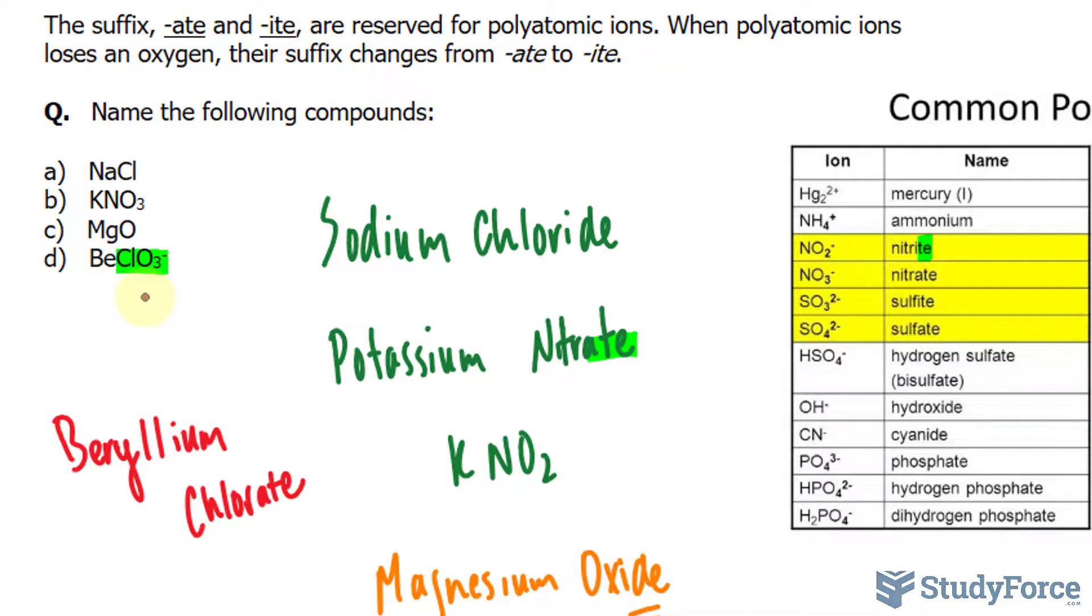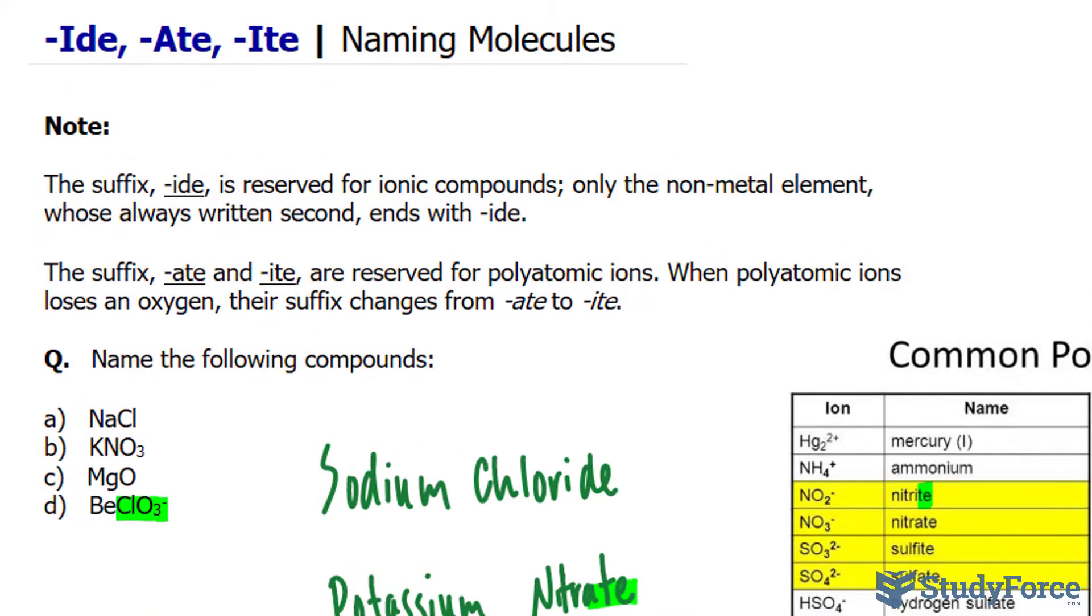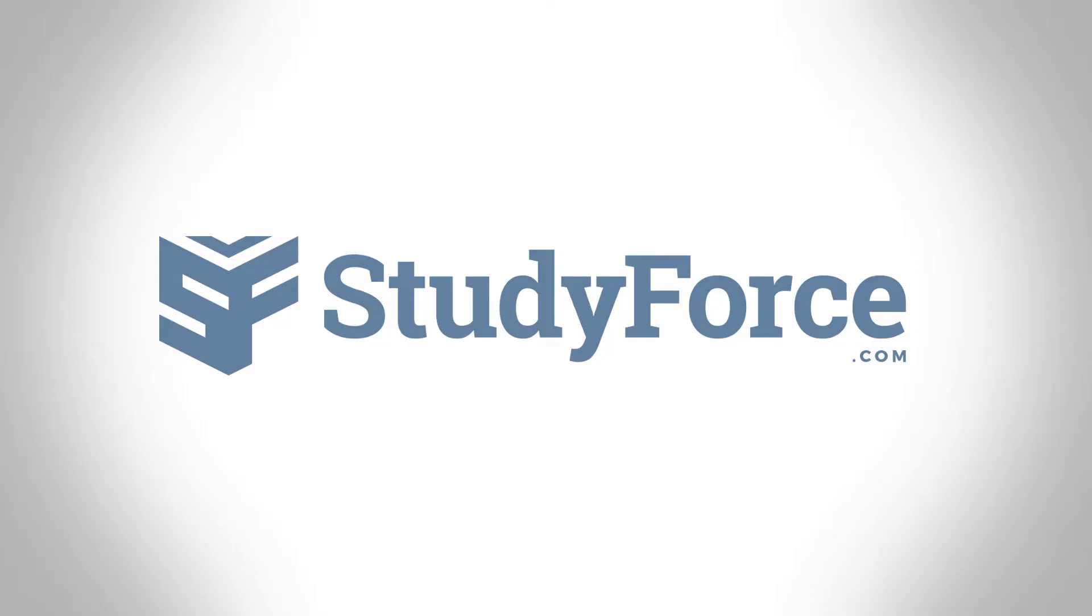And two less oxygens, ClO would be hypochlorite, just in case you're wondering. And that's all there is to it. If you have any further questions, feel free to leave it in the comment section below.